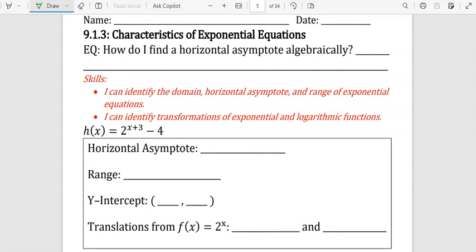We have the function h of x equals 2 to the x plus 3 power minus 4. The horizontal asymptote is right here, y equals negative 4. From that we could find that the range is y is greater than negative 4. It's greater than because there was no reflection.